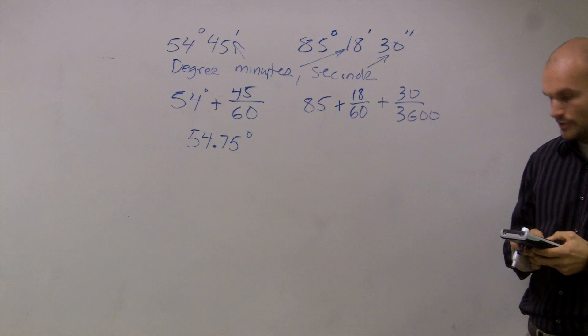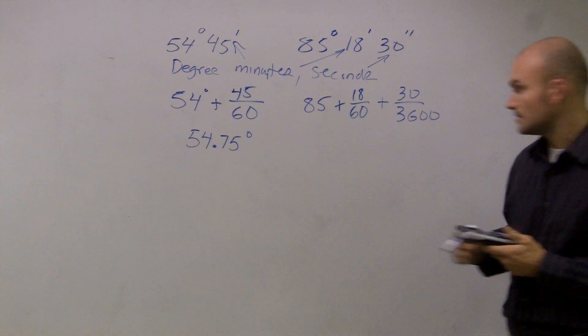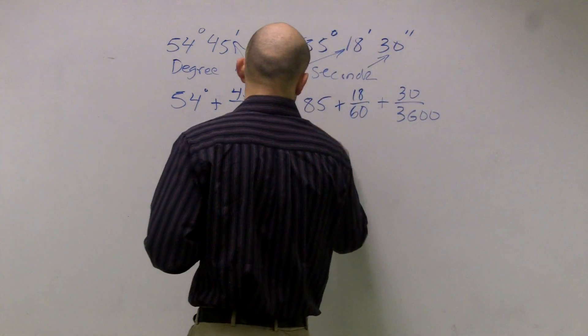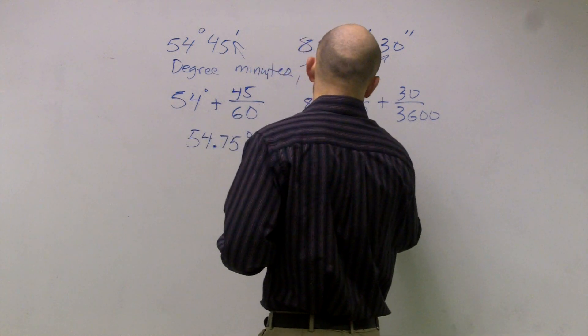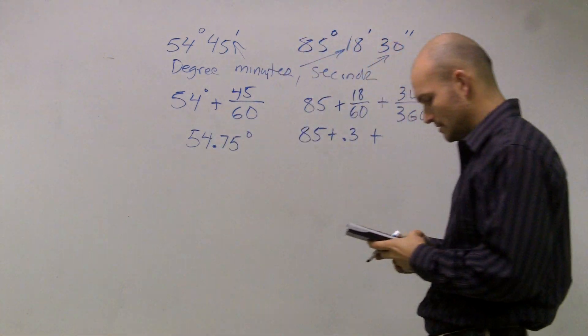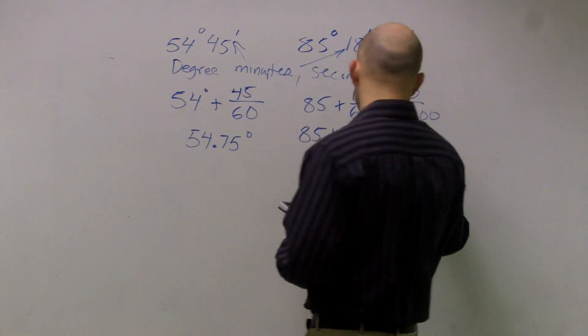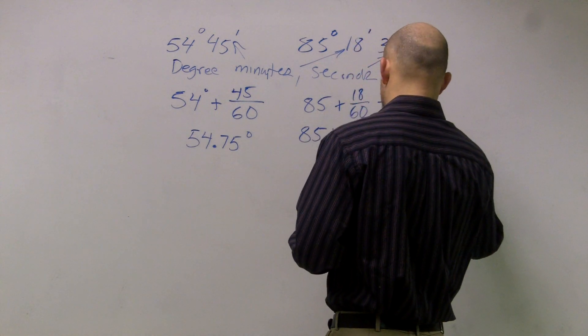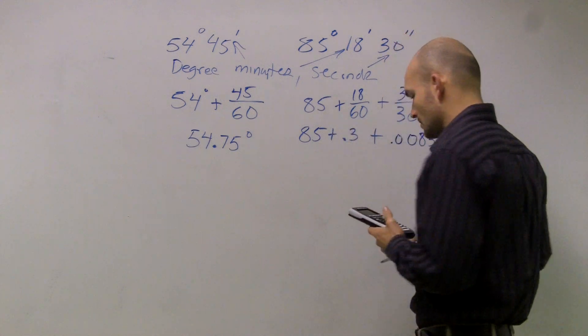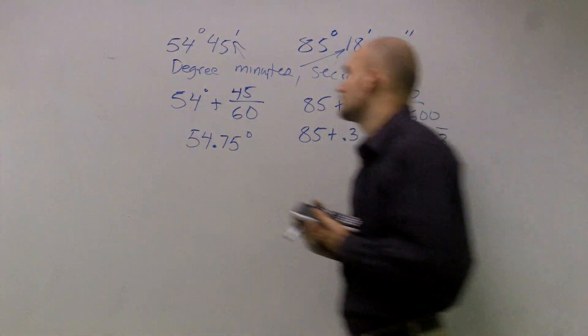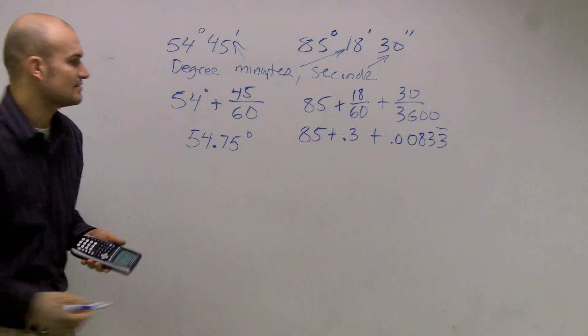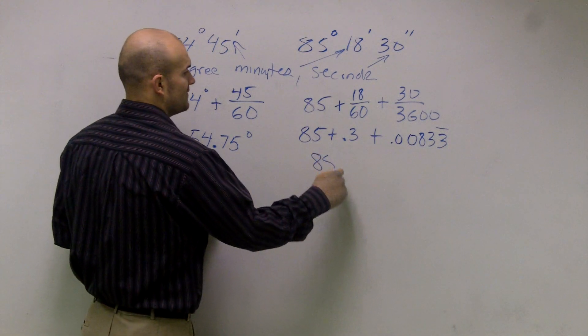So I do 85, which is 18 divided by 60 now. So I have 85 plus 0.3 plus 30 divided by 3,600, which is 0.0083 repeating. So then to find this angle, it's 85.3083.